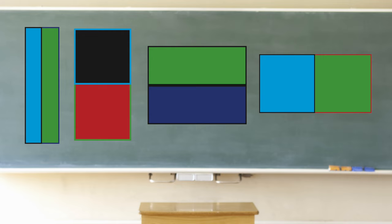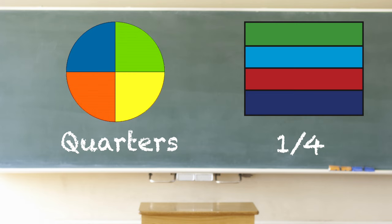Each half is the same size. Circles and rectangles can also be cut into other equal parts. They can be cut into three parts, called thirds, or four parts, called fourths or quarters.